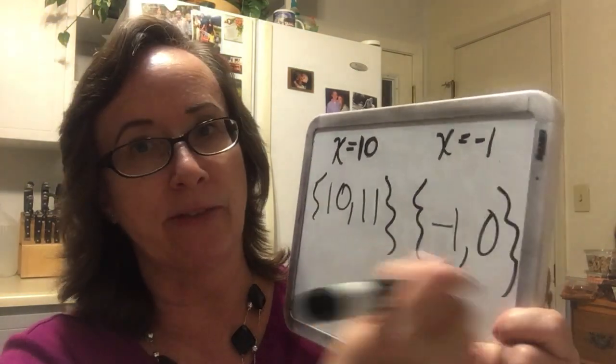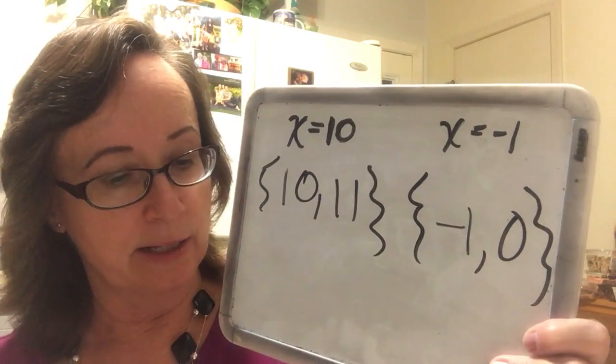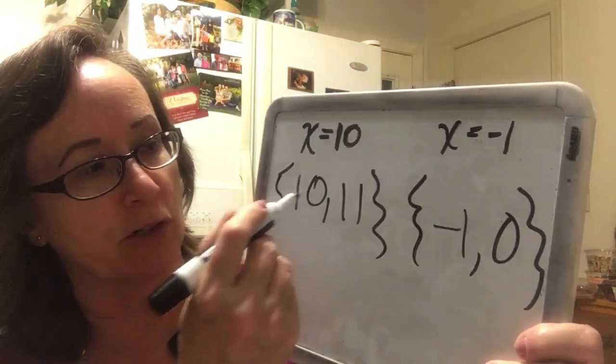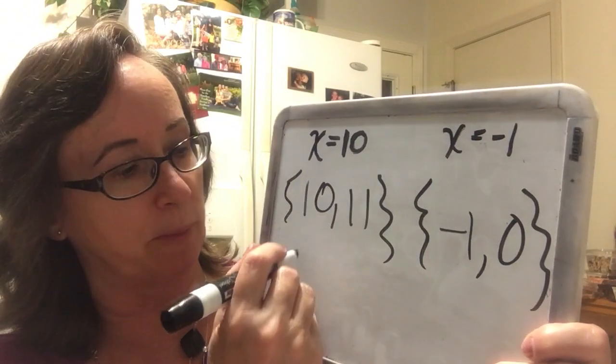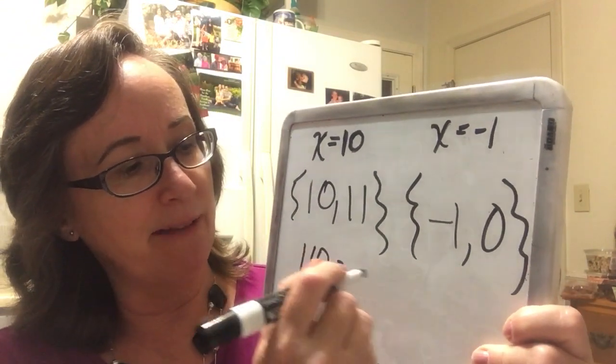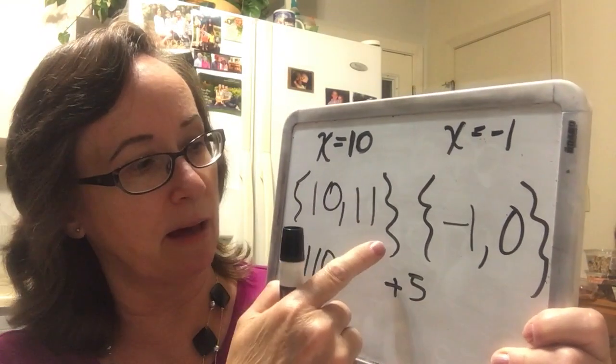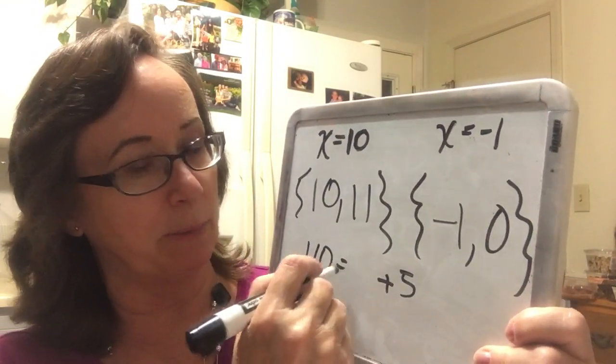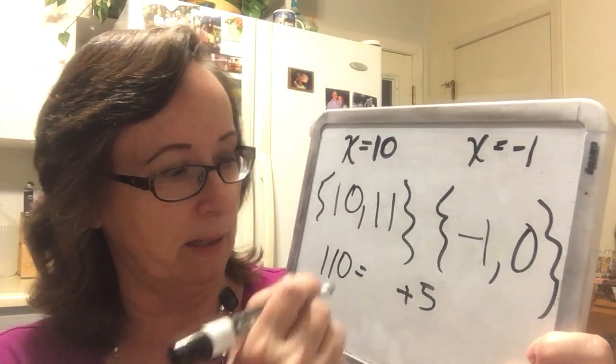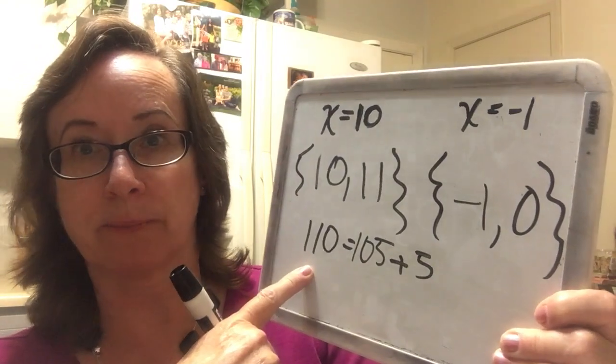So then I have to look and say, do they make sense? So it says the product of two consecutive integers—the product would be 110—is 5 more than 5 times their sum, and 5 times their sum would be 5 times 21, which would be 105. And it works.